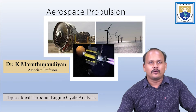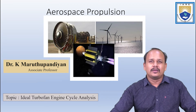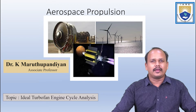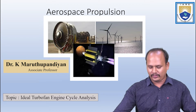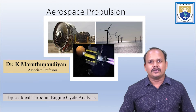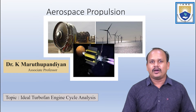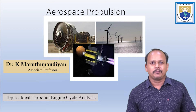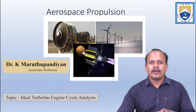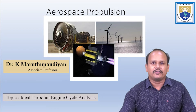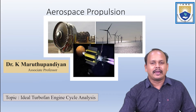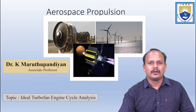Hello everyone, welcome back to the lecture series on aerospace propulsion. In the previous lecture we were discussing about the ideal cycle analysis of a turbojet engine. We saw how, given different design parameters, design limiting parameters, and flight parameters, we can calculate the flow properties at each station of our gas turbine components, and ultimately how we can calculate the exit velocity produced by the engine.